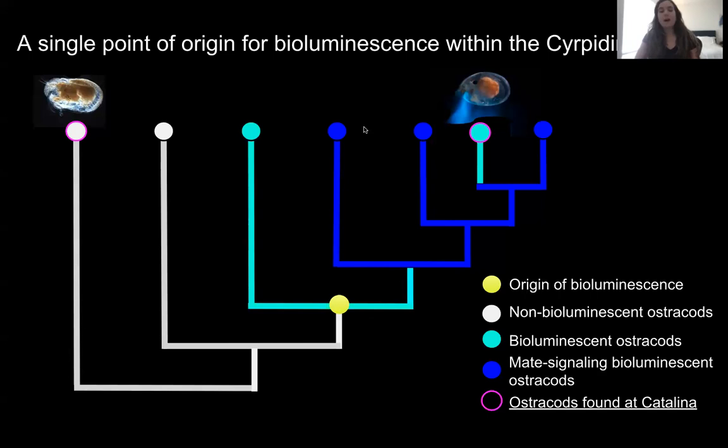All ostracods have upper lip glands, but only bioluminescent ostracods have these specialized luciferin and luciferase cell types that comprise the light organ.